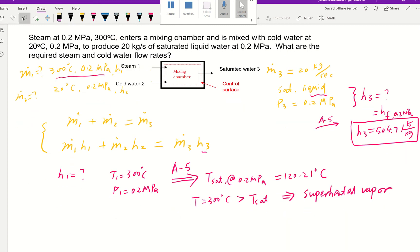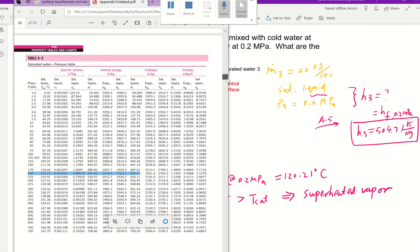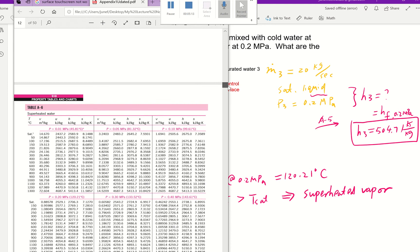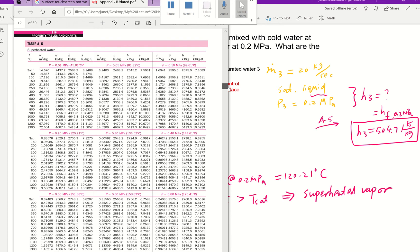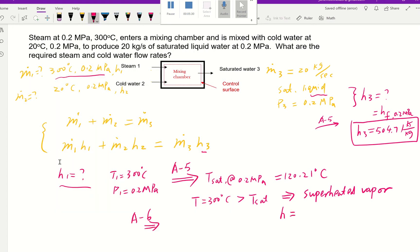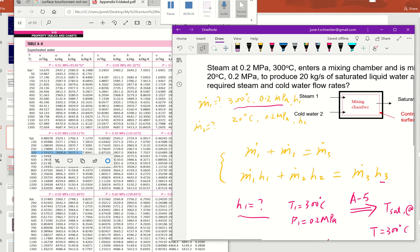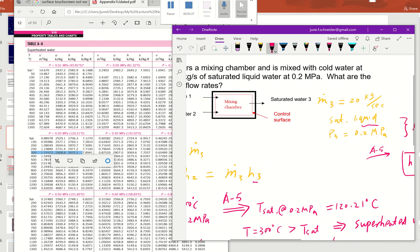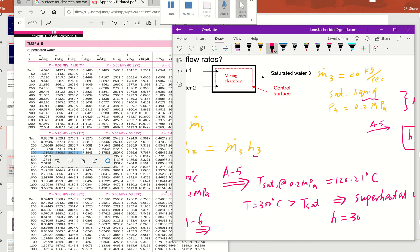So if it's superheated vapor, in order to find our h₁ we need to go to A-6. So going back to steam table, looking at table A-6 at 0.2 MPa and 300°C, we're looking at our h value. So h value here is equal to 3072.1 kJ/kg. That's our h₁.